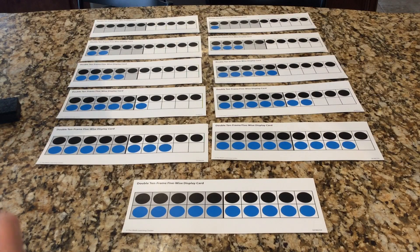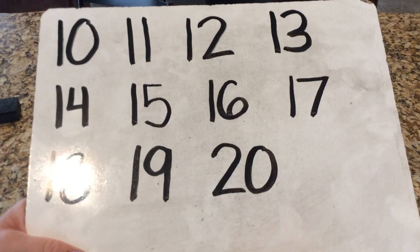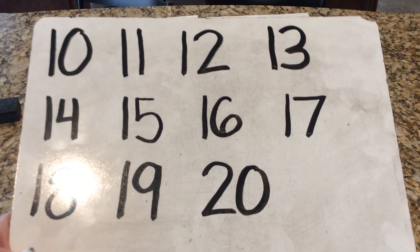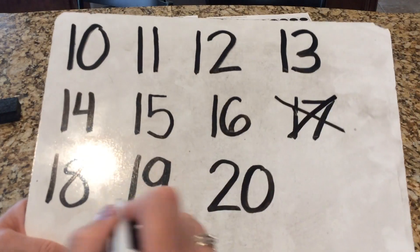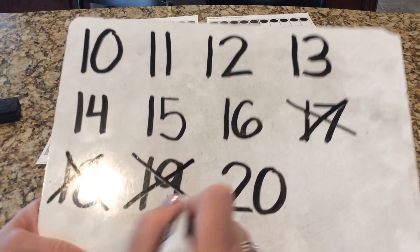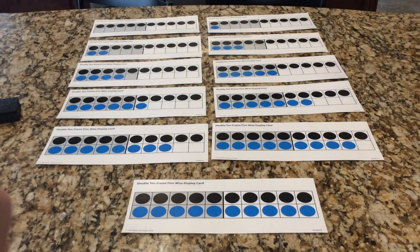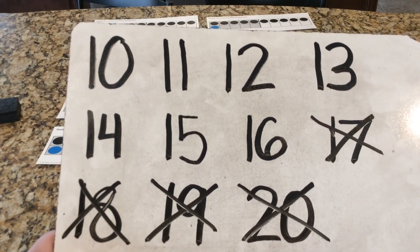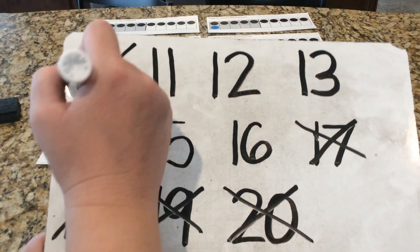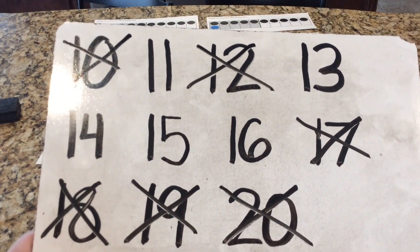Is the number less than 17? My number is less than 17. So any number smaller than 17 gets to stay — all the numbers bigger than 17 we cross out. So 17, 18, 19, and 20 are not an option. Is the number next to 11? The number is not next to 11. 11 has two neighbors: 10 is next to 11, and 12 is next to 11. So we can cancel those out. He's narrowed it down now to five numbers.